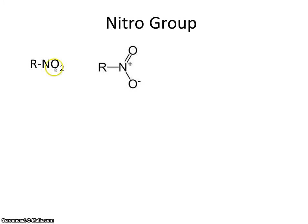You may also see it like this. This is NO2. So this is the nitro group. This would be the parent chain.